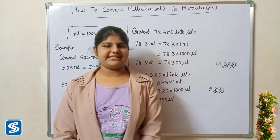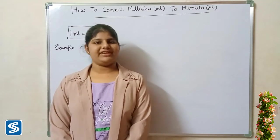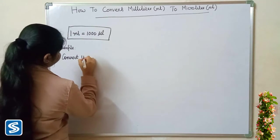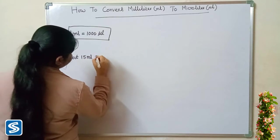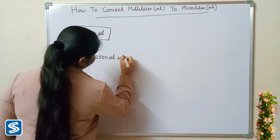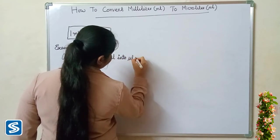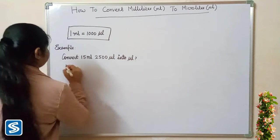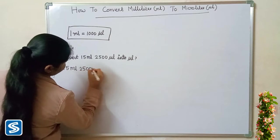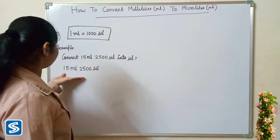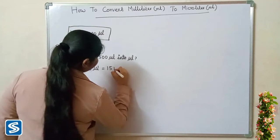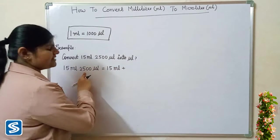Now we will take one more example. Convert fifteen milliliters two thousand five hundred microliters into microliters. Fifteen milliliters two thousand five hundred microliters can be written as fifteen milliliters plus two thousand five hundred microliters.